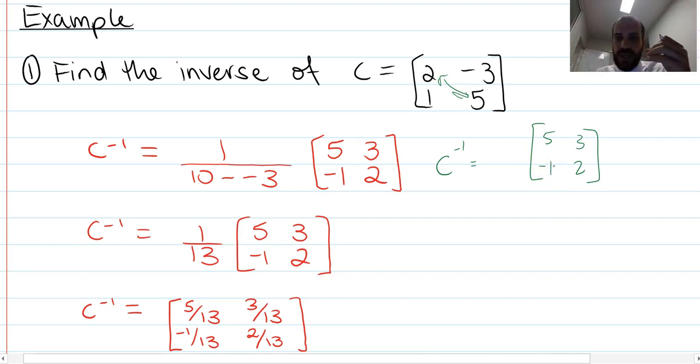Now we need to multiply that by our scalar, which is 1 over the determinant. And the determinant is equal to 2 times 5 minus 1 times negative 3. That's 1 over 10 minus 1 times negative 3. So that's positive, so it's 1 over 13. 5, negative 1, 3, 2.